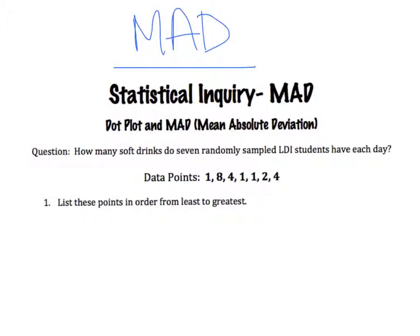The first thing we need to do is order our data points from least to greatest. My question is how many soft drinks do seven randomly sampled LDI students have each day? I have my data points listed, so now listing them in order from least to greatest.